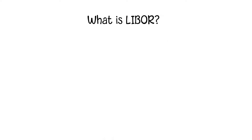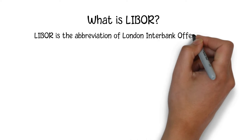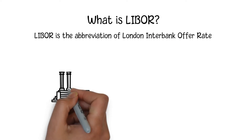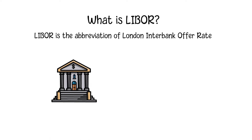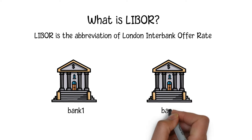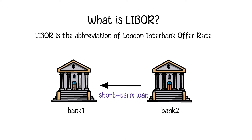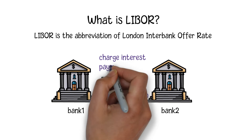LIBOR is the abbreviation of London Interbank Offer Rate. It is an indicator of the average interest rates that UK banks charge other banks and financial institutions for short-term loans. Like people, banks also need to borrow money from each other to satisfy their short-term needs.